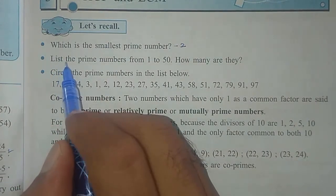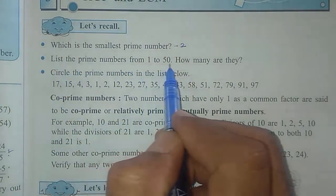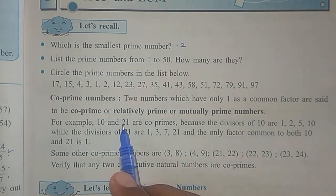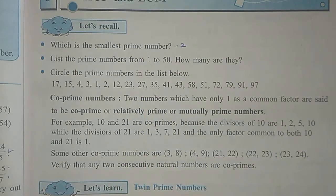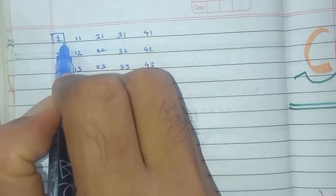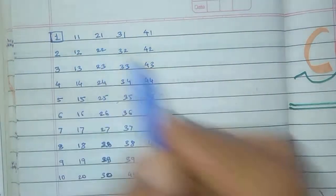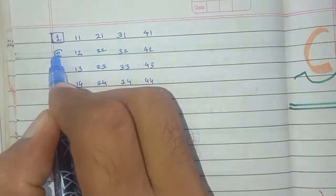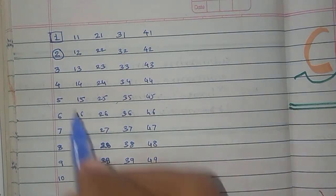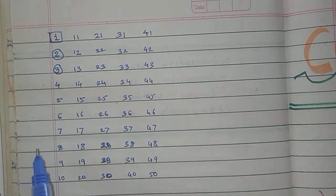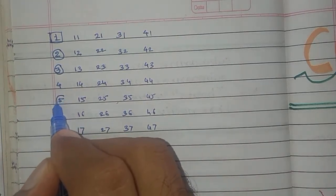The next question is: list the prime numbers from 1 to 50 and how many are there? I will explain on the notebook. 1 is neither prime nor composite. 2 is a prime number — I am going to circle the numbers which are prime. 3 is a prime number. 4 is in the 2 times table, so it is not prime. 5 is a prime number.